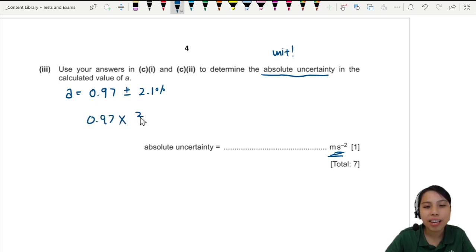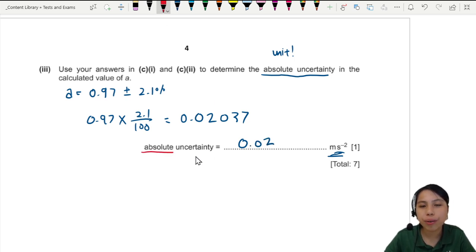So, 2.1 over 100. So, this one, you should get a super long number. 0.02037. We don't need so many. Just keep it to 1 SF. That's the general convention for absolute uncertainty. This is special.